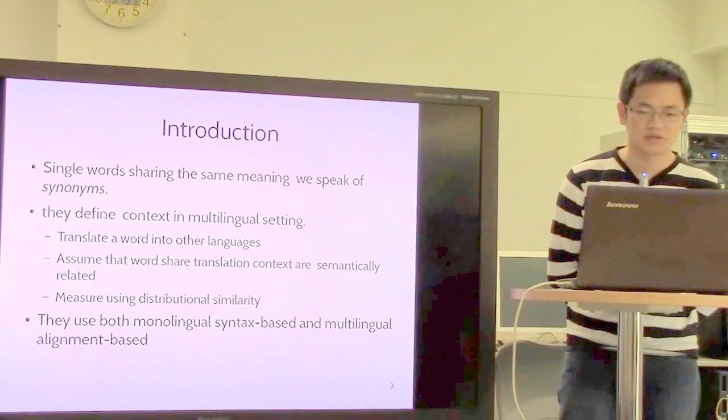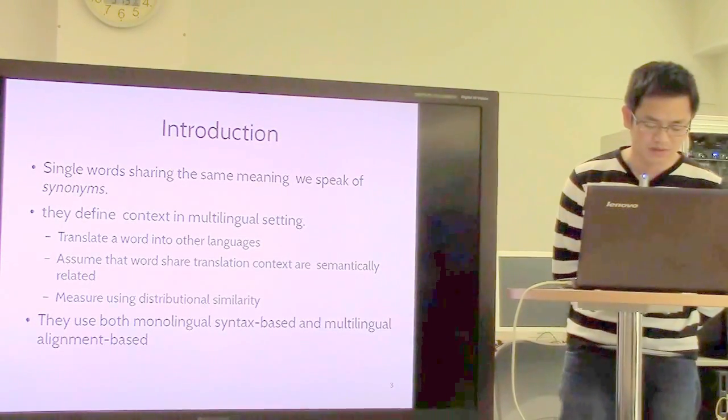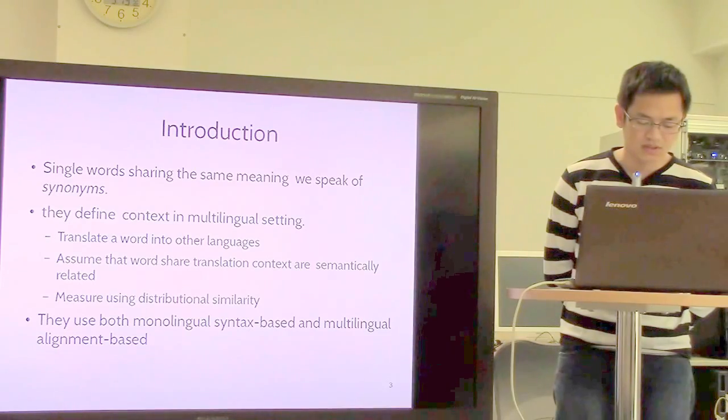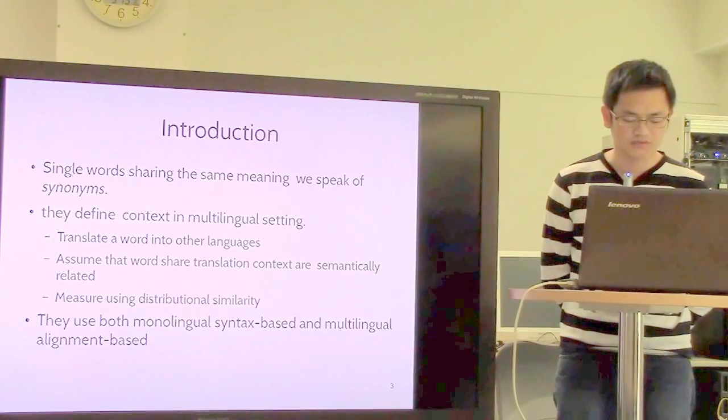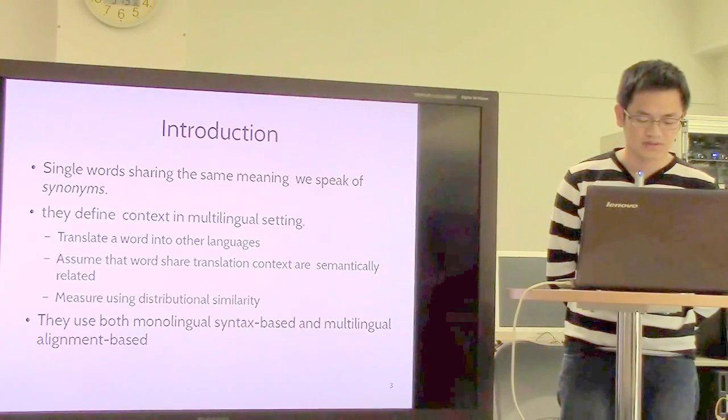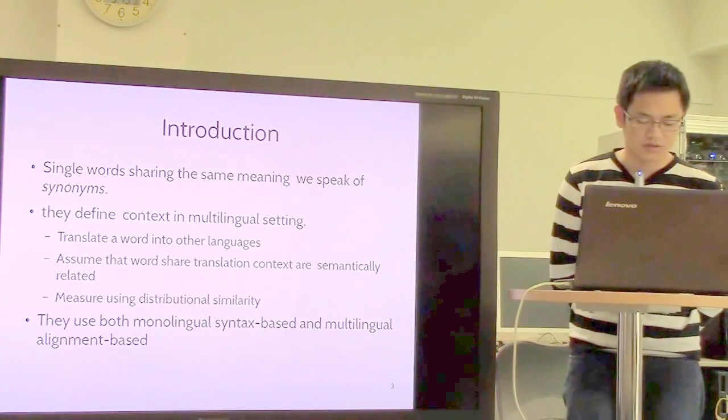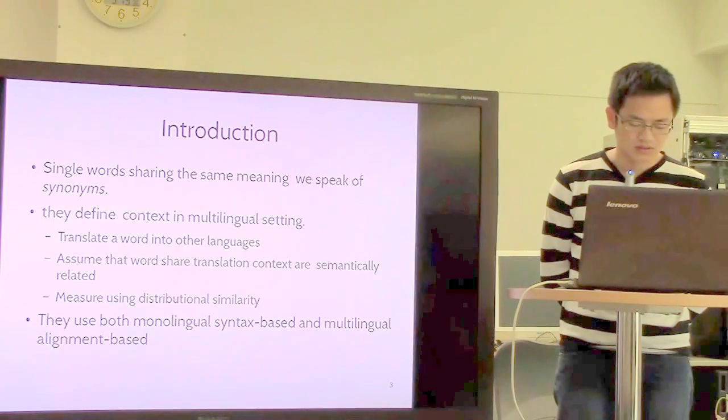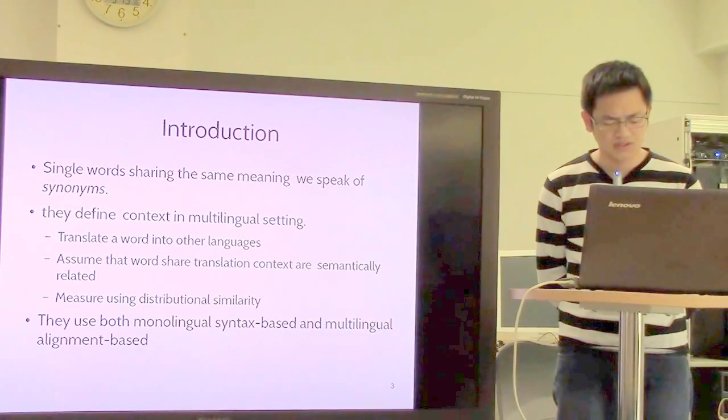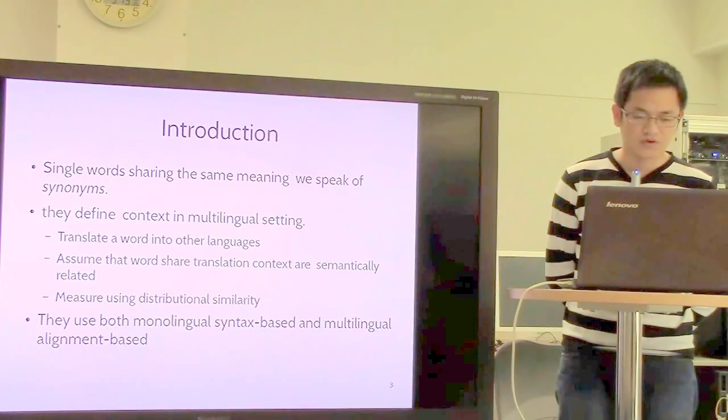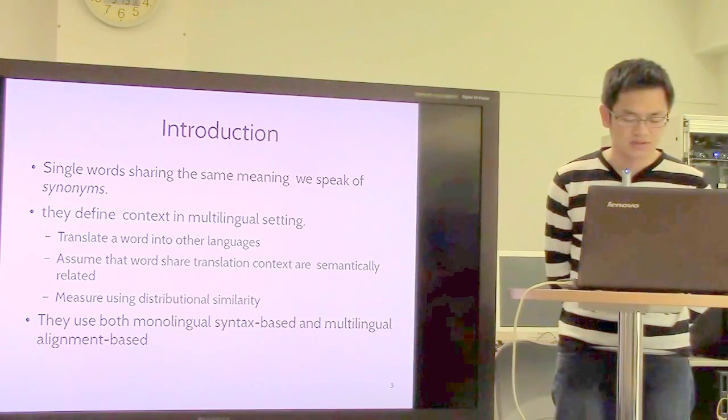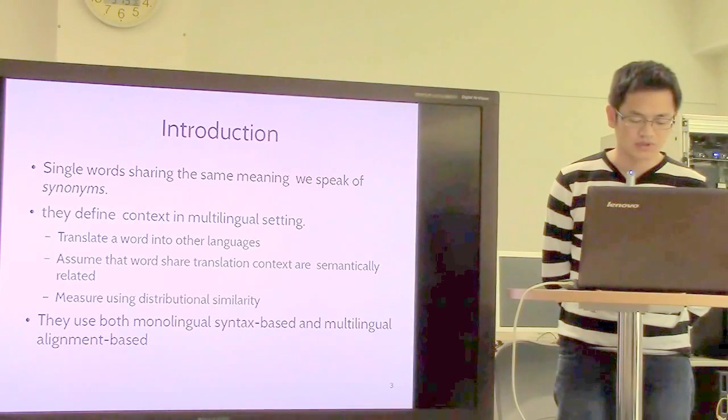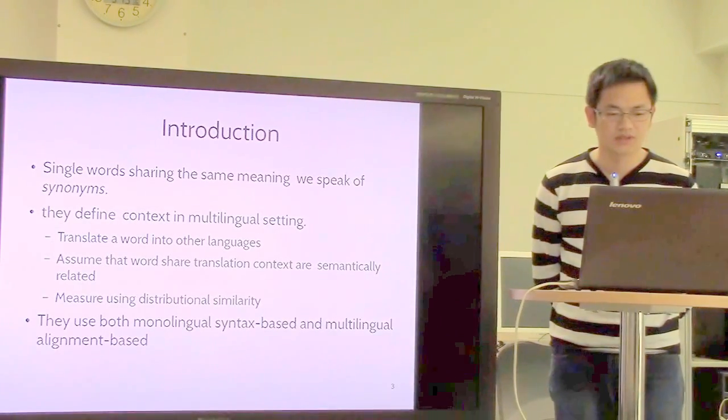When single words share the same meaning, we speak of synonyms. Identifying synonyms is very critical for many NLP tasks like information retrieval, where people ask for a set of words that may be found in text using a completely different set of words. In this paper they find automatic accurate synonyms for Dutch using two different resources: one is the large monolingual corpus, and two is the multilingual parallel corpus including eleven languages.